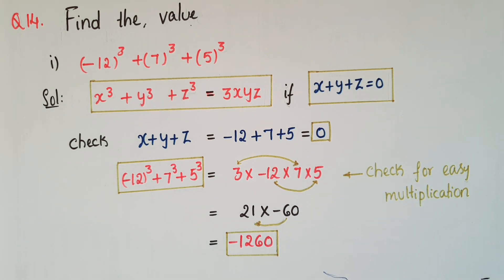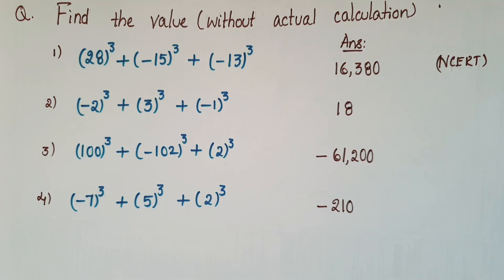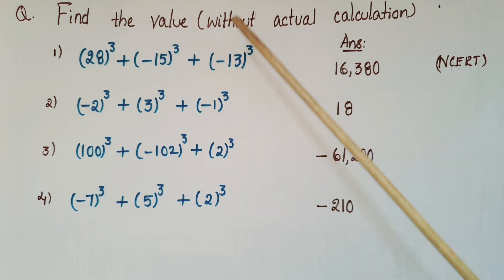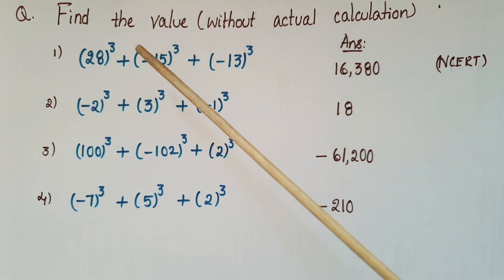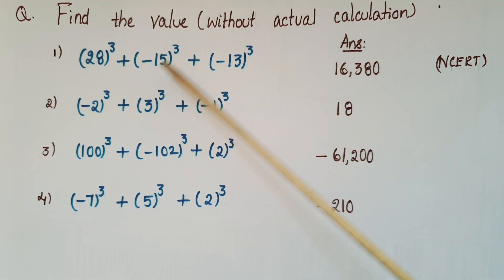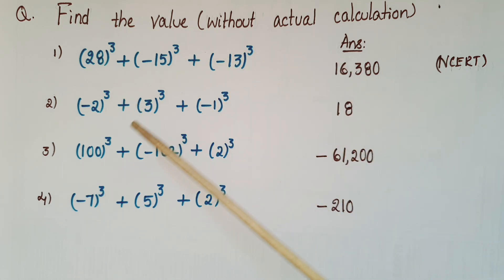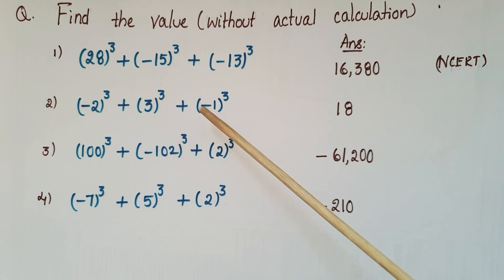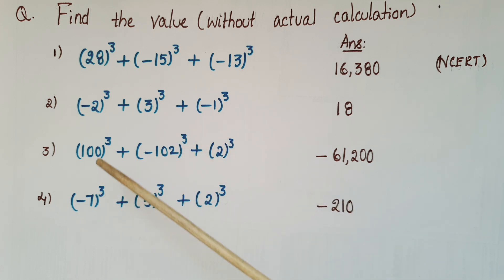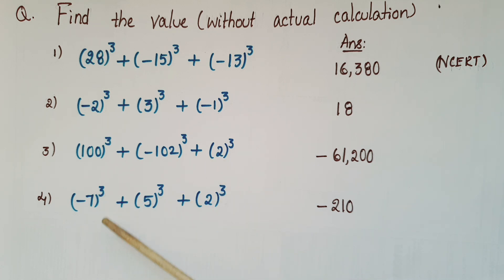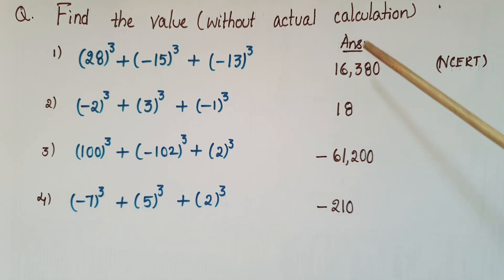Do these problems using the same formula — find the value without actual calculation. First: 28 cube plus minus 15 whole cube plus minus 13 whole cube. Second: minus 2 whole cube plus 3 cube plus minus 1 whole cube. Third: 100 cube plus minus 102 whole cube plus 2 cube. Fourth: minus 7 whole cube plus 5 cube plus 2 cube. These are the answers.